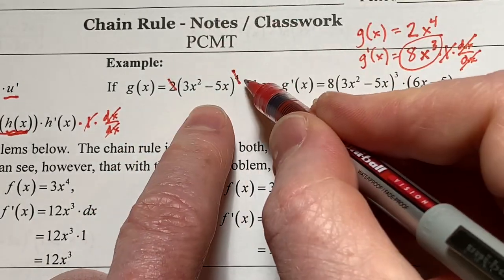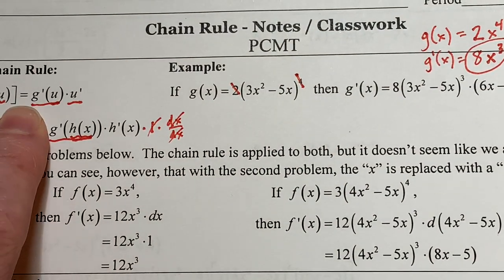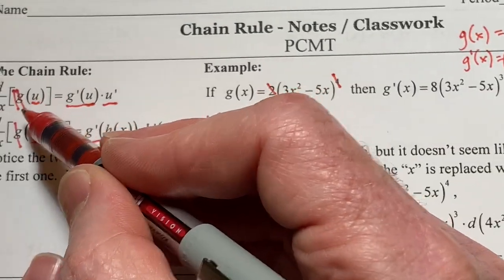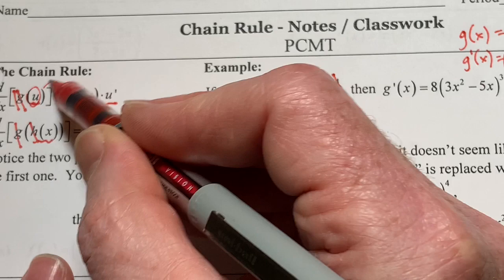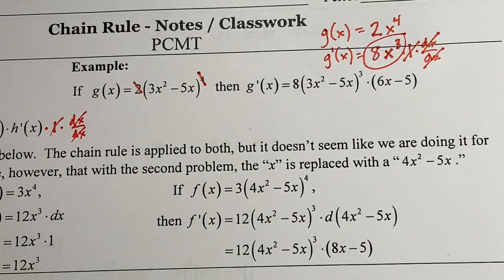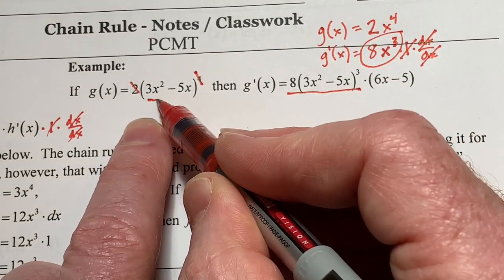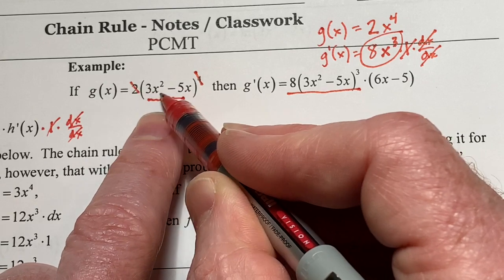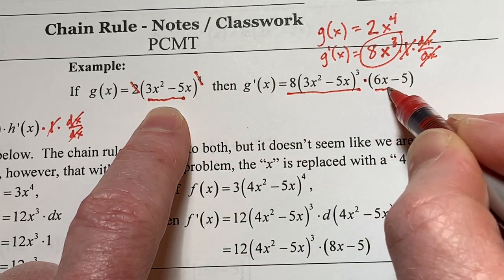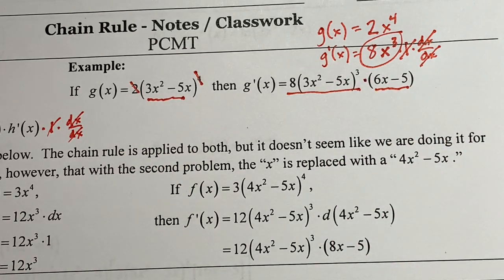Now that I've taken care of the outer part — the g — I go back and take the derivative of the inner part, 6x minus 5, and link it to the original part through multiplication. Hence, the chain rule. So here's what the answer looks like: 8 blah cubed times the derivative of the inner, 6x minus 5, linked together. And that's it.